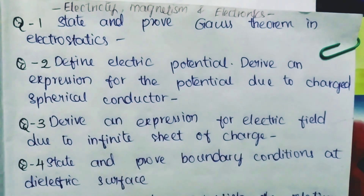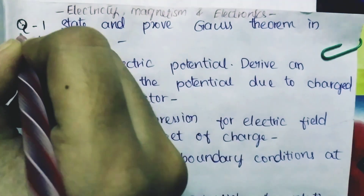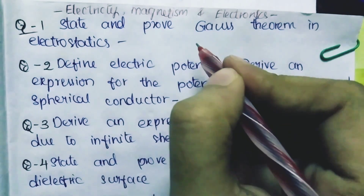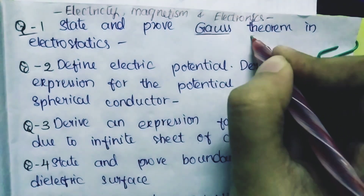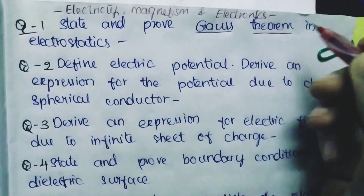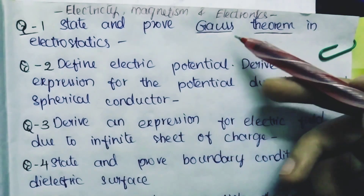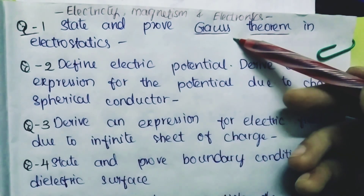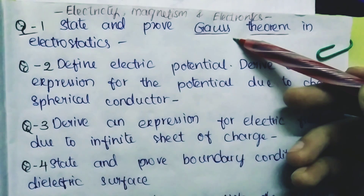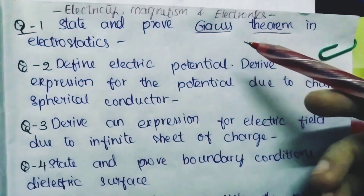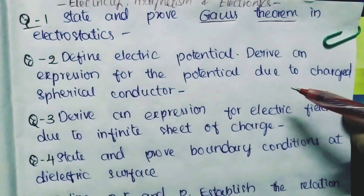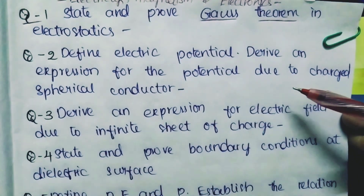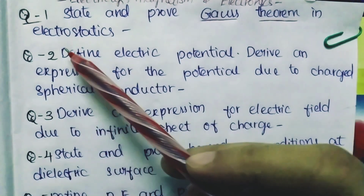State and prove Gauss's Theorem in Electrostatics. Very very important - this is from Unit 1. Gauss's theorem is very important. You need to learn the statement by heart and also learn its proof. Prepare all 15 questions clearly without mistakes, and definitely you will get pass marks - not only pass marks, but above 40 to 50 marks.